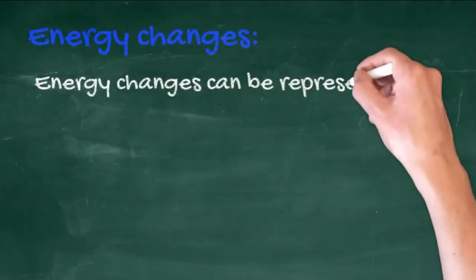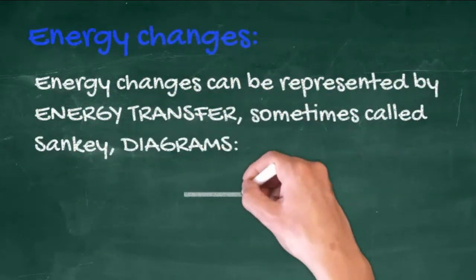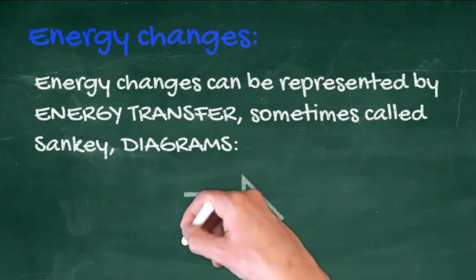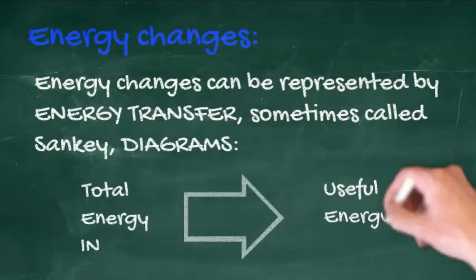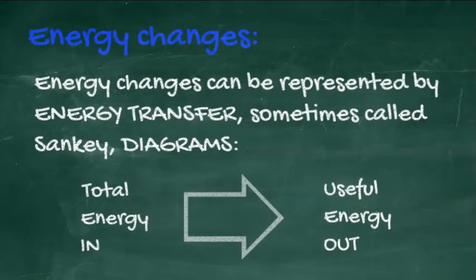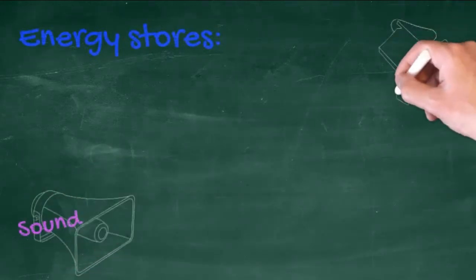Energy changes can be represented by energy transfer diagrams, sometimes called Sankey diagrams. This is just a simple arrow, but the diagrams can become quite complex. We're mostly interested in useful energy out and wasted energy.